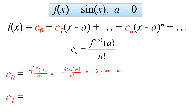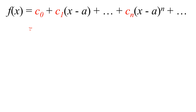For c_1, based on the formula, we need f prime at x equal to A divided by factorial of 1. This is the same as cosine at x equal to A divided by 1, which equals 1. Since A equal to 0, essentially the first two terms give us 0 plus x.